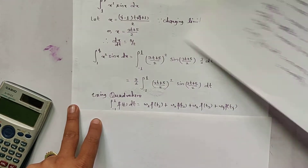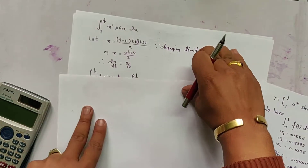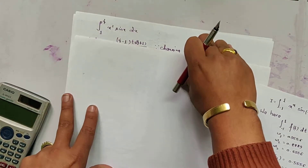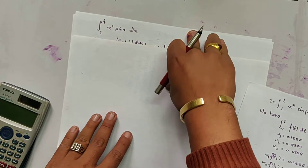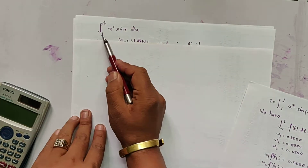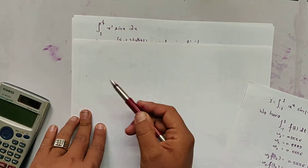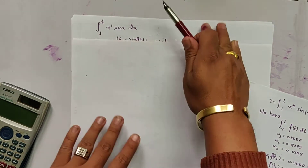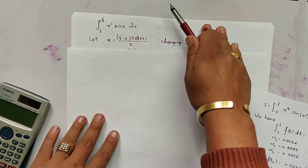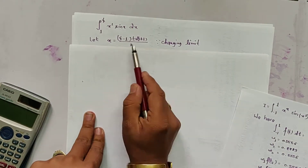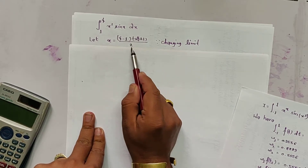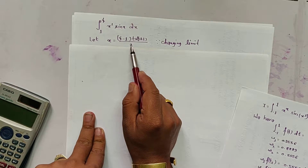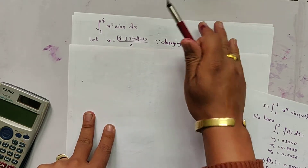Now let us calculate the integral using the Gaussian 4-point form. Here the limit is 1 to 4, which is not minus 1 to 1, so we have to change the limit. The formula for substitution is x = [(b minus a)*t + (a plus b)] / 2. Please view the previous video if you do not know this formula.